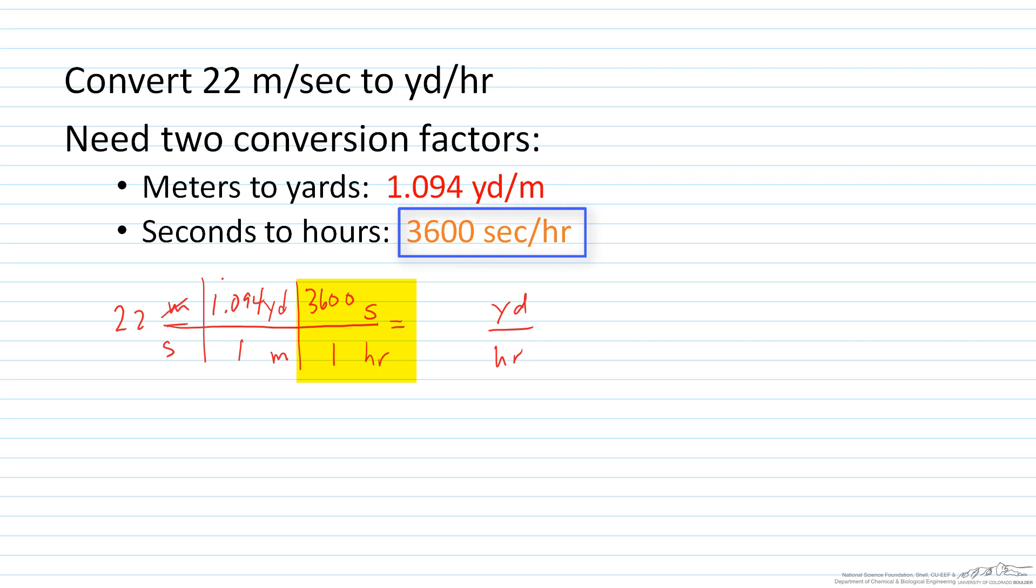And I just multiply things. You see that the units are going to cancel. The meters and the seconds cancel. And I get about 87,000 yards per hour. So that's how we can do a more complicated conversion. And I've got a couple more example screencasts in case you need more practice.